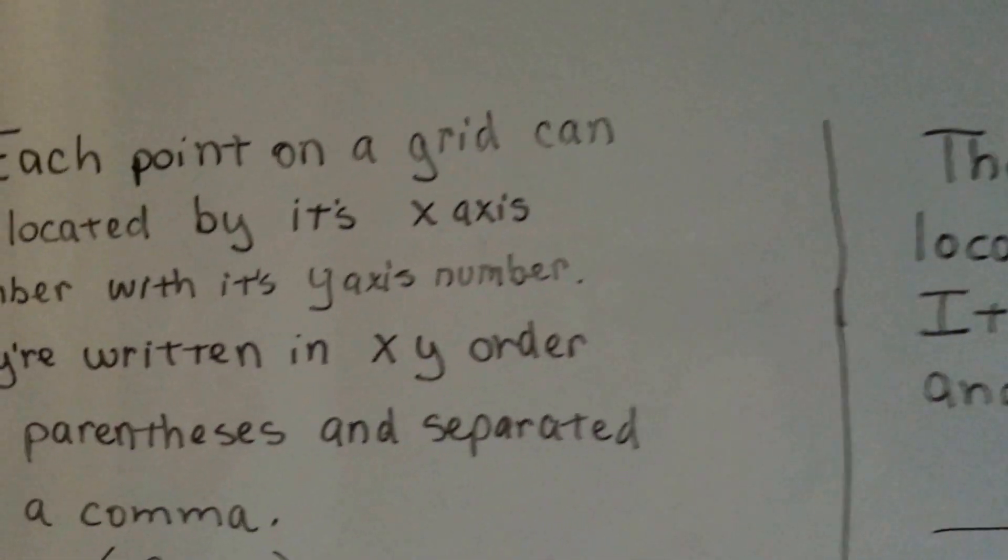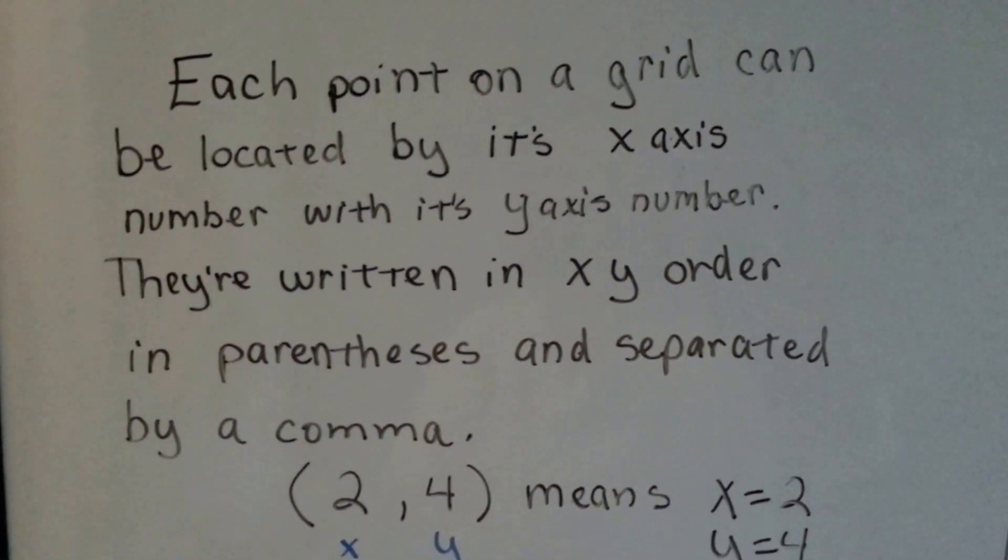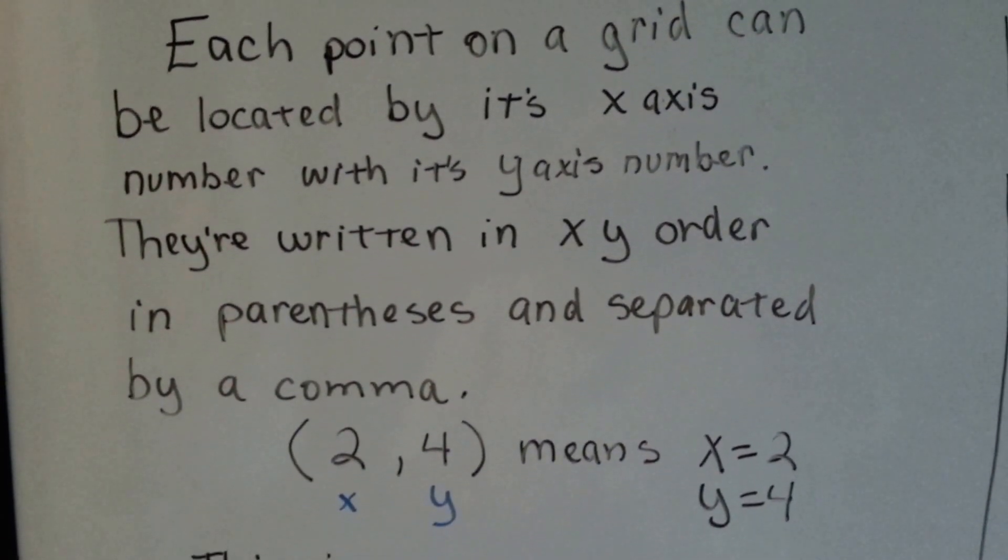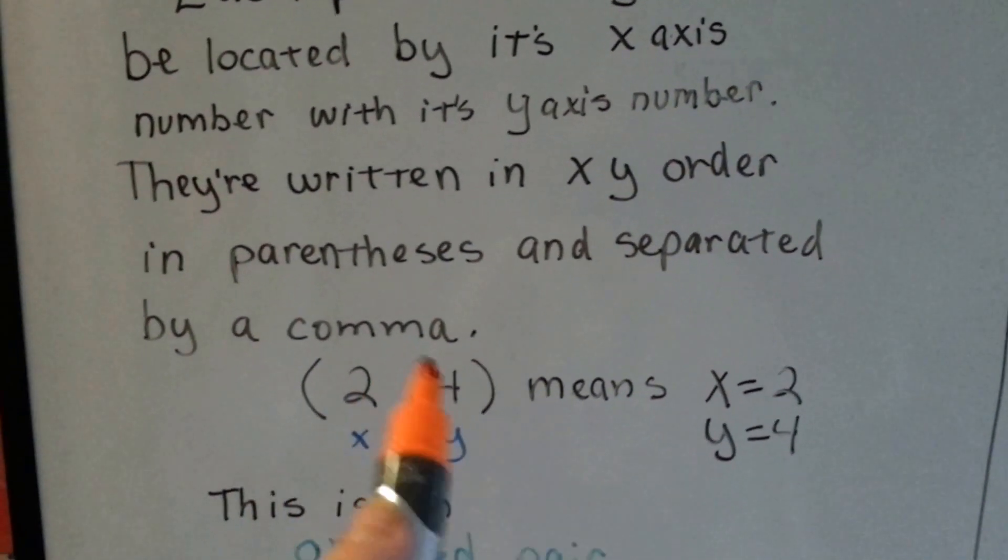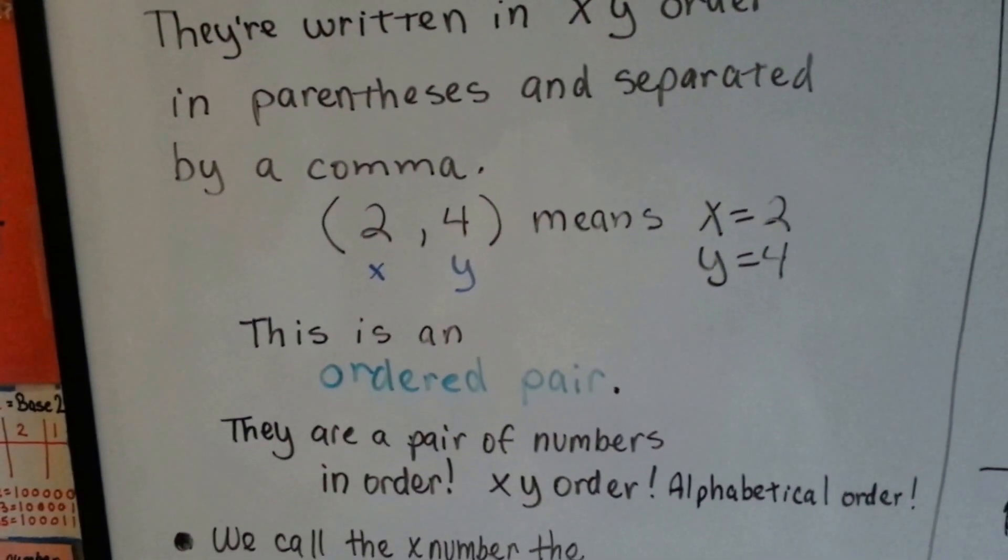Each point on a grid can be located by its x-axis number and its y-axis number. They're written in x-y order, in parentheses, and separated by a comma. This is the x number, and that's the y number. This is an ordered pair.